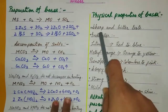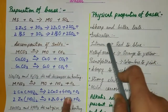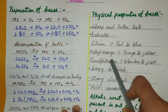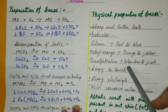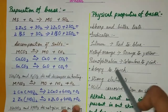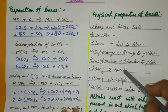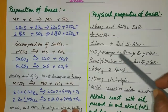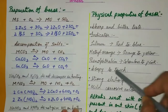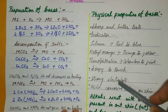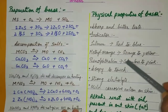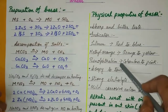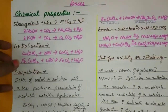Physical properties of bases: they have a sharp bitter taste. Indicators — red litmus turns blue; methyl orange turns from orange to yellow; phenolphthalein turns from colorless to pink. Bases have a soapy touch because the oil in your skin quickly forms a soap on contact. They act as strong electrolytes because they can dissociate, and they have a mild corrosive action on skin, much less than acids.